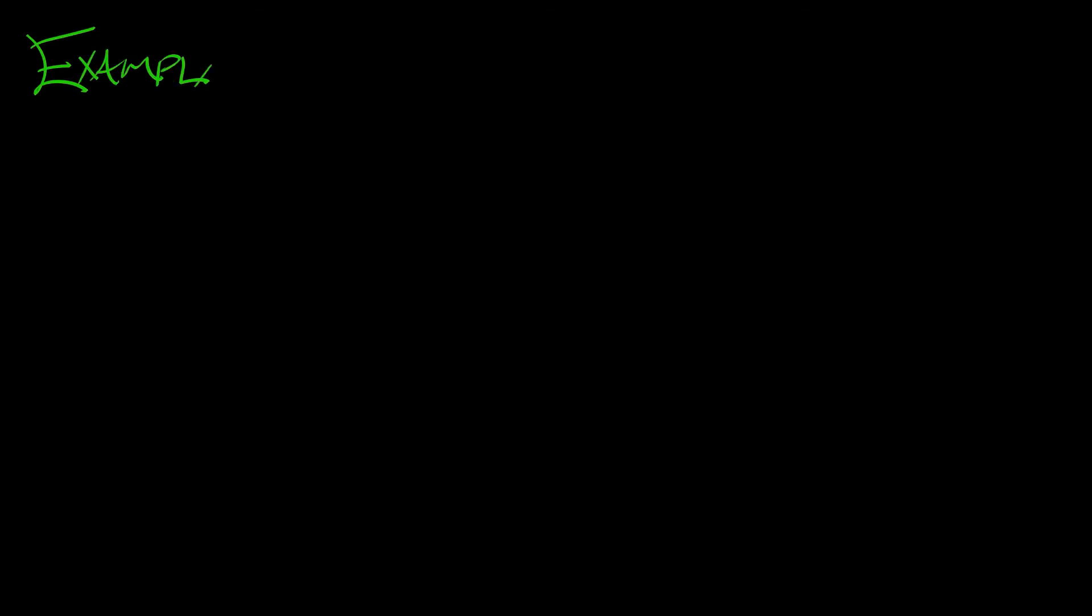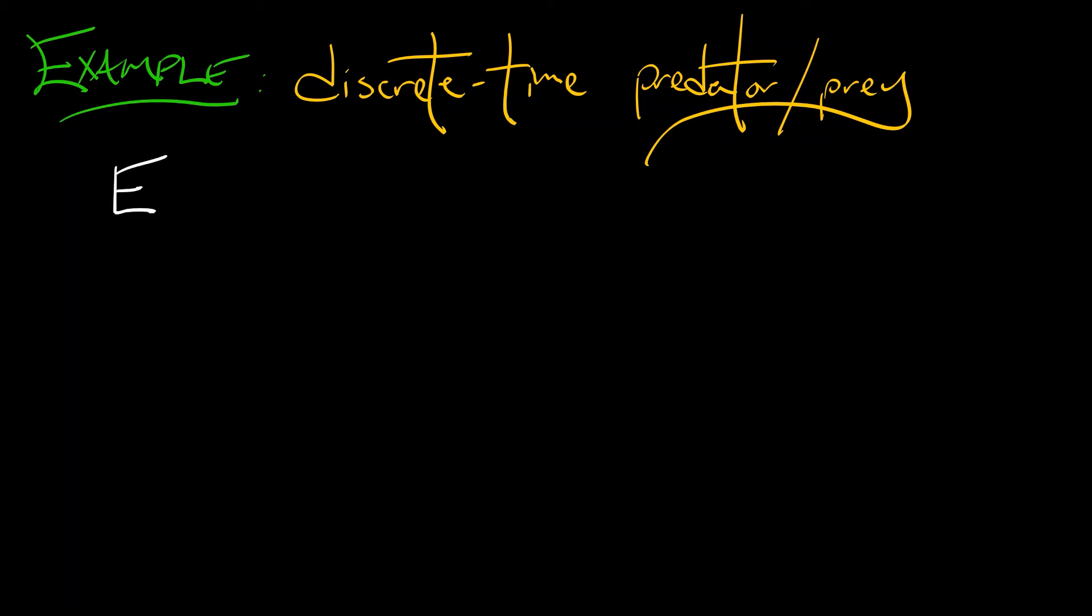For a very different sort of example, let's consider a predator-prey model, but in discrete time. This is going to be really interesting. We haven't done a lot with discrete time systems yet. Consider the following: E of (x,y), again, these are two species sizes, is given by the following.